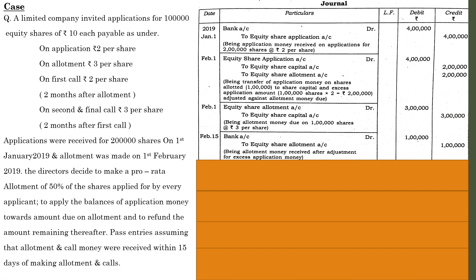The concept is very simple. Any excess amount adjusted at the time of application will be adjusted in the allotment. So at the time of allotment, the company need not collect the full allotment amount — only the remaining portion after adjusting the excess received at application. The important aspects of pro-rata are: finding the ratio, how to allot excess amount received, and how much should be collected after adjusting the excess amount.